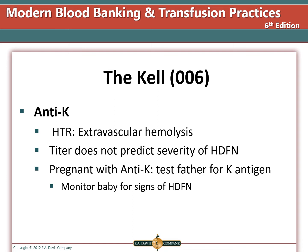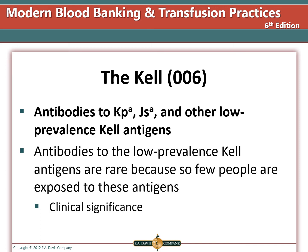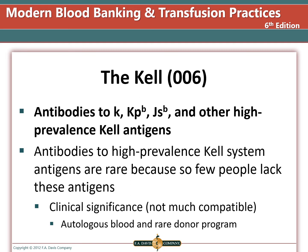When antibodies are made to low-prevalence antigens, compatible blood is easy to find, though these are rare since few people are exposed to these antigens. They can cause hemolytic disease of the fetus and newborn and transfusion reactions when present. Antibodies to high-prevalence antigens are rare since most people have these antigens and won't make antibodies against them — but finding compatible blood will be nearly impossible. These patients should donate autologously and participate in a rare donor program.